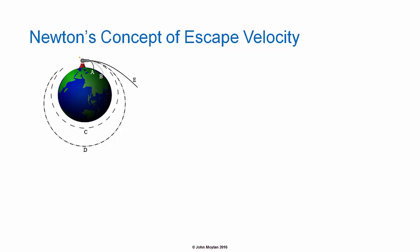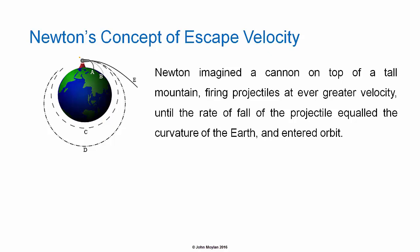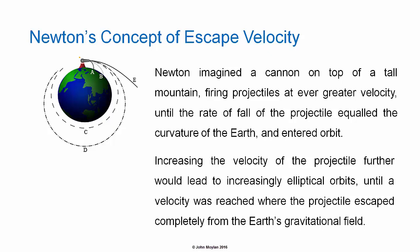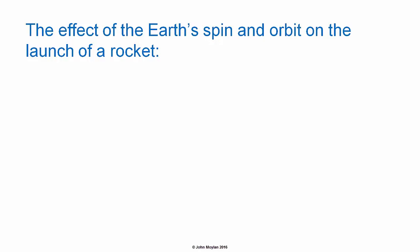Newton's concept of escape velocity: Newton imagined a cannon on top of a tall mountain firing projectiles at ever greater velocity, until the rate of fall of the projectile equals the curvature of the Earth and the projectile entered orbit. Increasing the velocity of the projectile further would lead to increasingly elliptical orbits, until a velocity was reached where the projectile escaped entirely from the Earth's gravitational field.